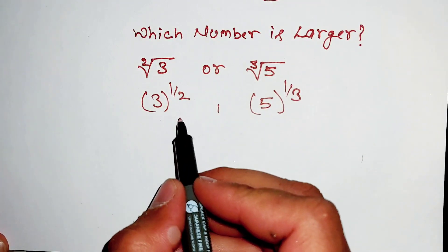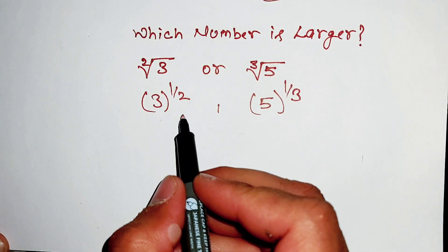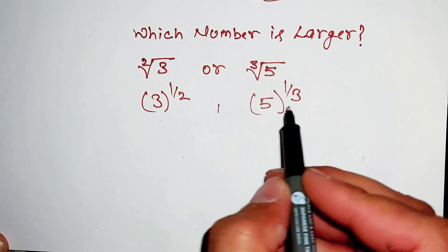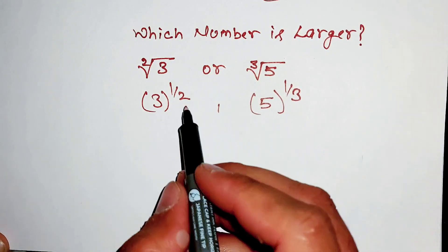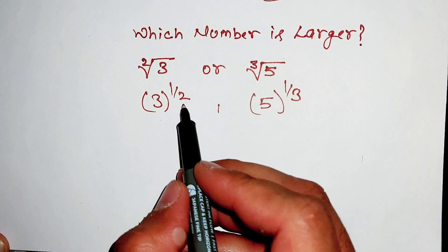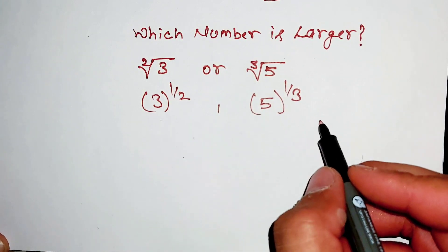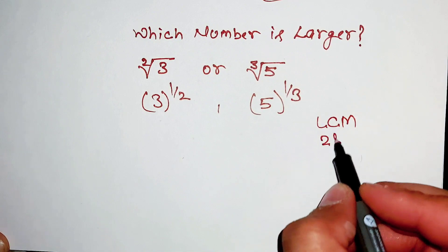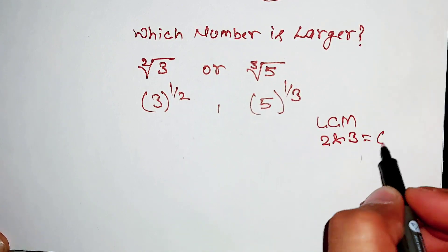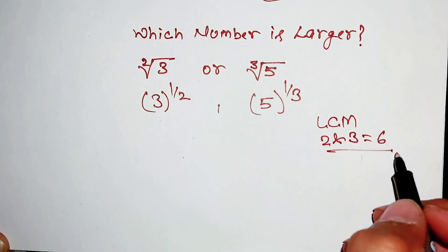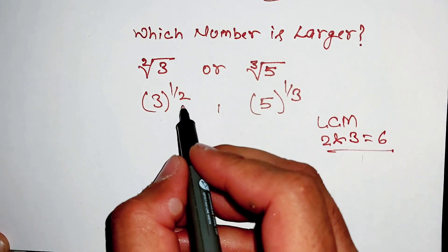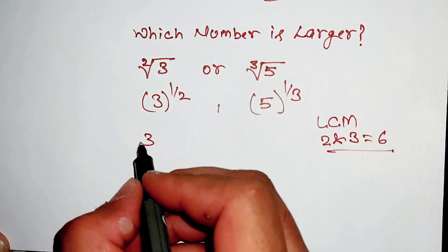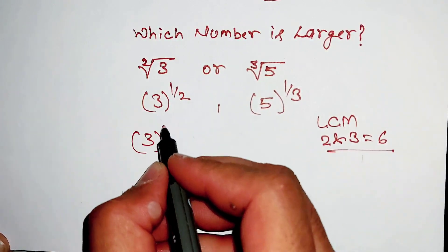Now we will multiply both these powers — 1 over 2 and 1 over 3 — by the LCM of 2 and 3. The LCM of 2 and 3 is 6. We will multiply both powers by 6, giving us 3 power (1 over 2 × 6) and 5 power (1 over 3 × 6).